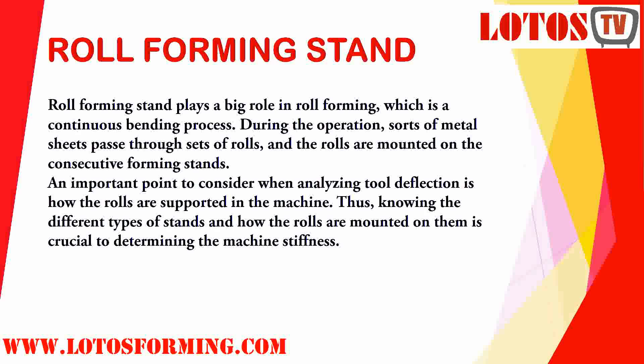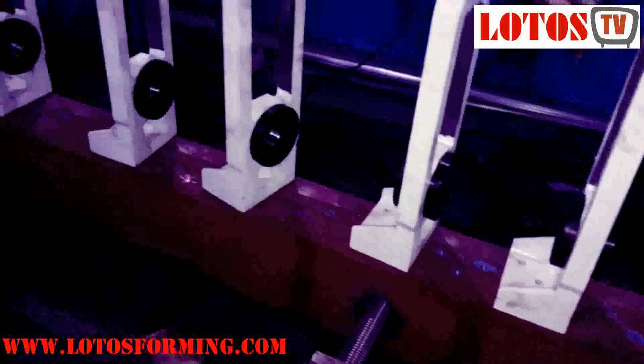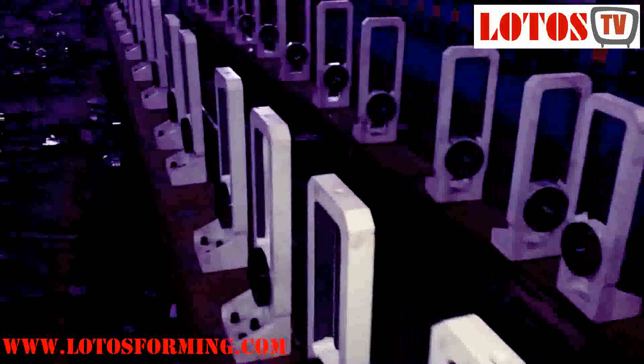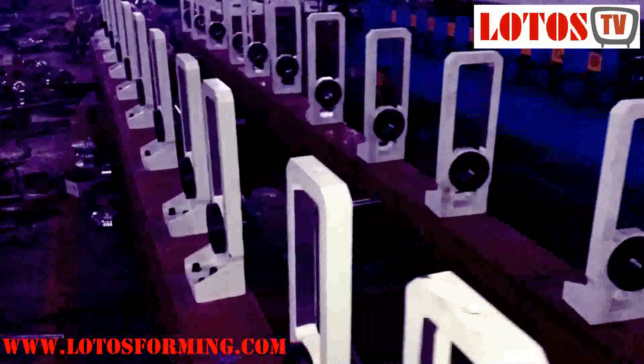Roll forming stands play a big role in roll forming, which is a continuous bending process. During operation, a source of metal sheet passes through a set of rolls, and the rolls are mounted on the forming stands. An important point to consider when analyzing tool deflection is how the rolls are supported on the machine.